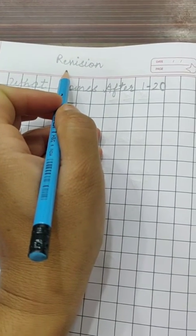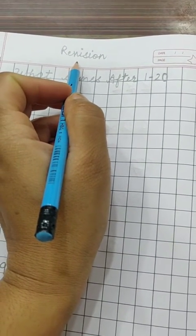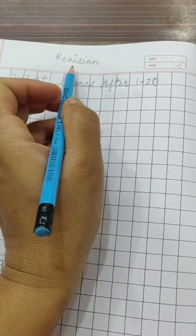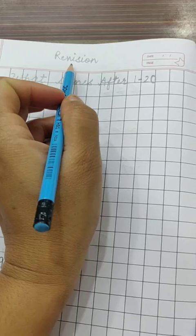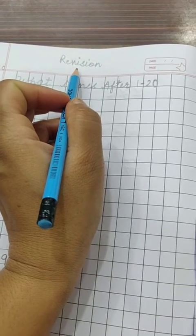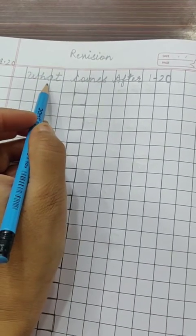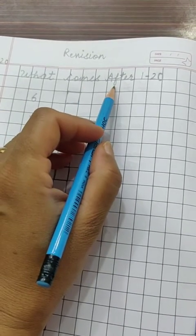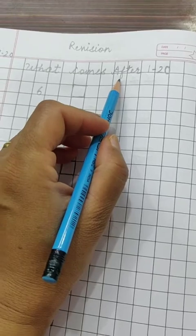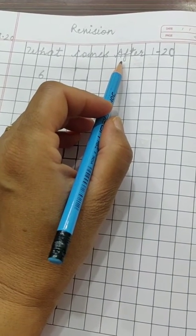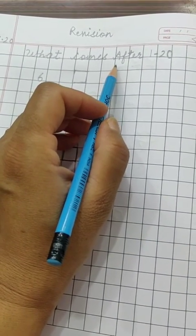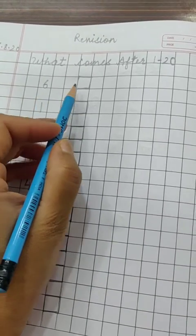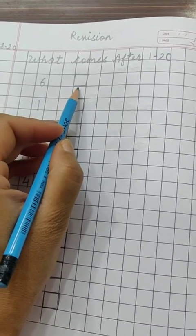This is revision work. What comes after, what comes after? After means what number comes next to the box, what do you have to write?